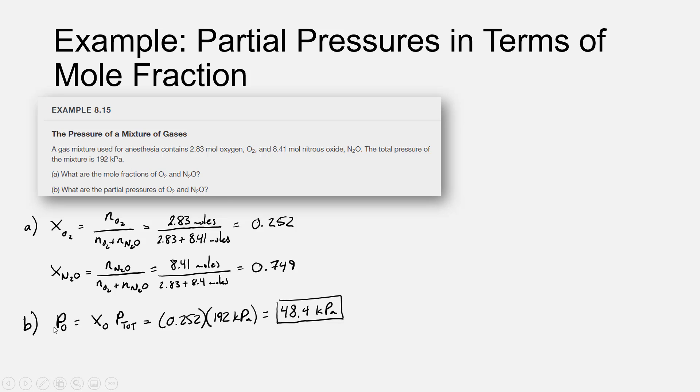So that means that in part B, the partial pressure of O2—uh-oh, my twos went away, please insert a 2 here and a 2 here, contrary to what it says on the whiteboard right now, it takes two atoms of oxygen to make a molecule of oxygen. So our partial pressure of oxygen is equal to the mole fraction of oxygen times the total pressure, 0.252 times 192 kilopascals. The partial pressure of the oxygen is 48.4 kilopascals.